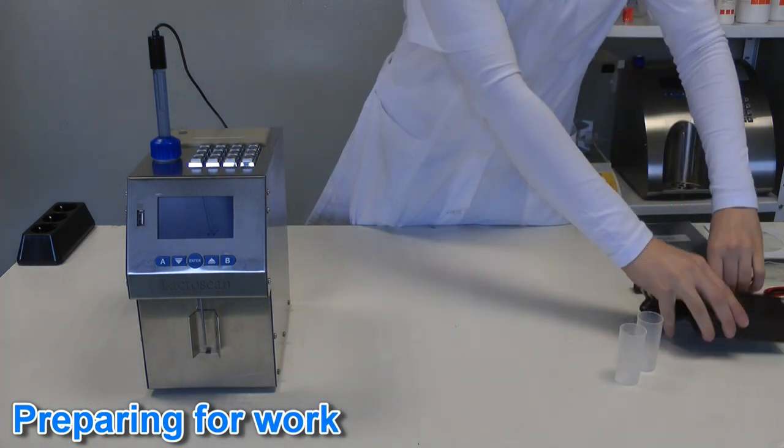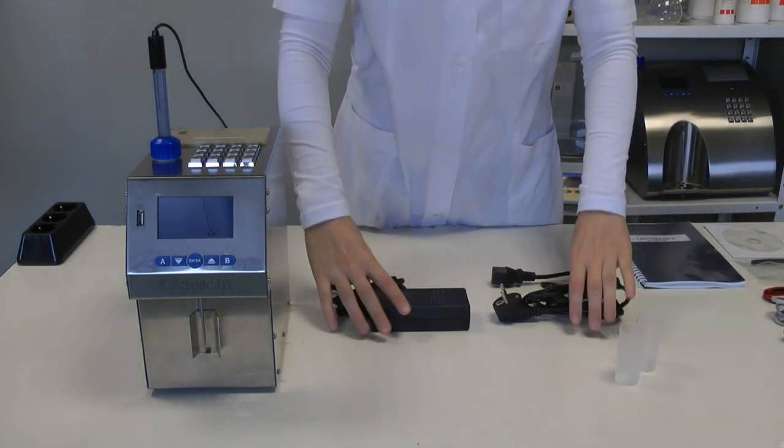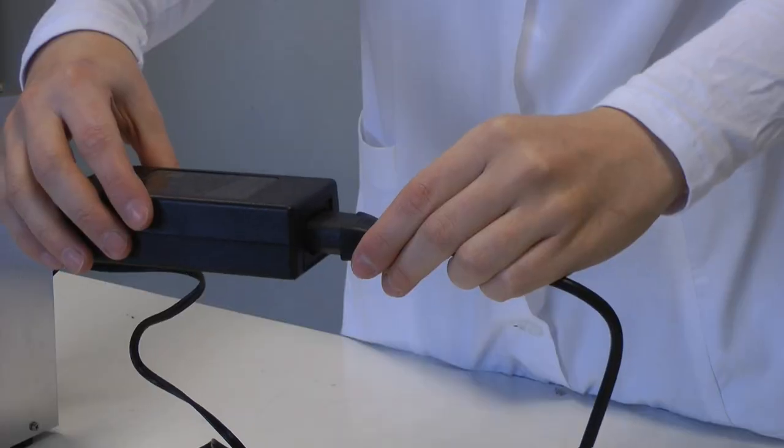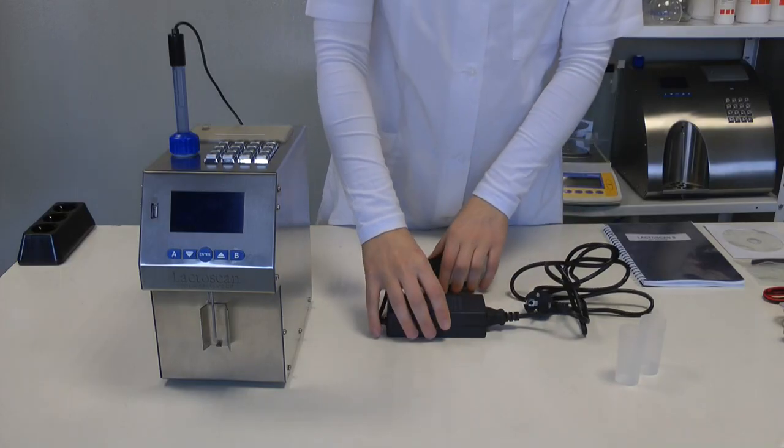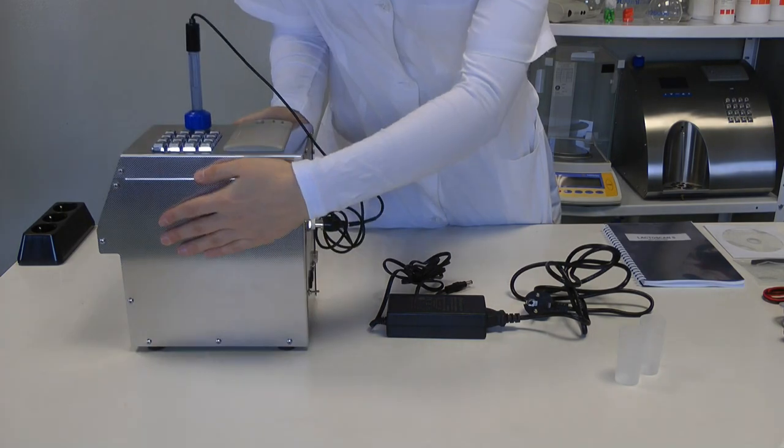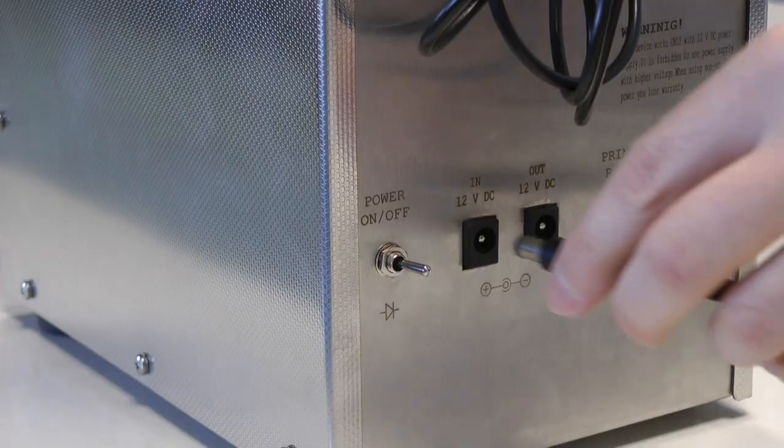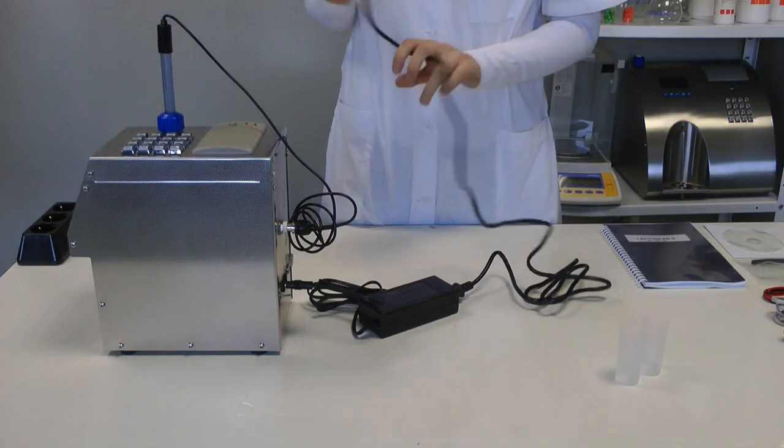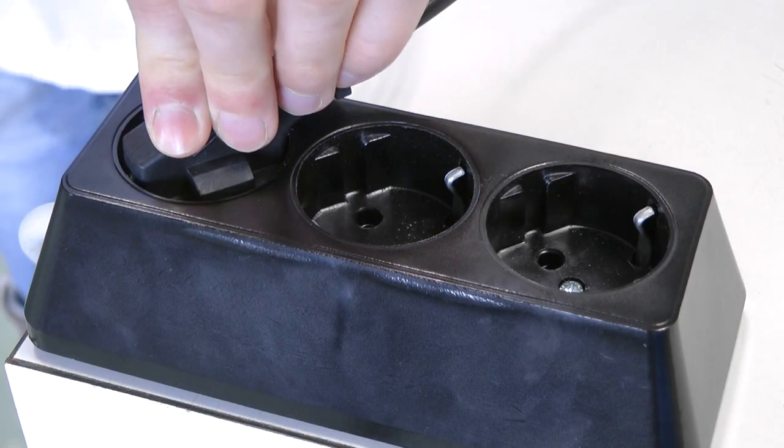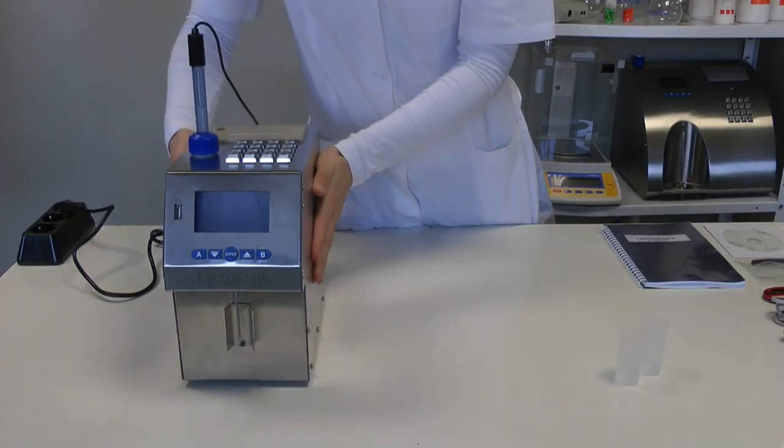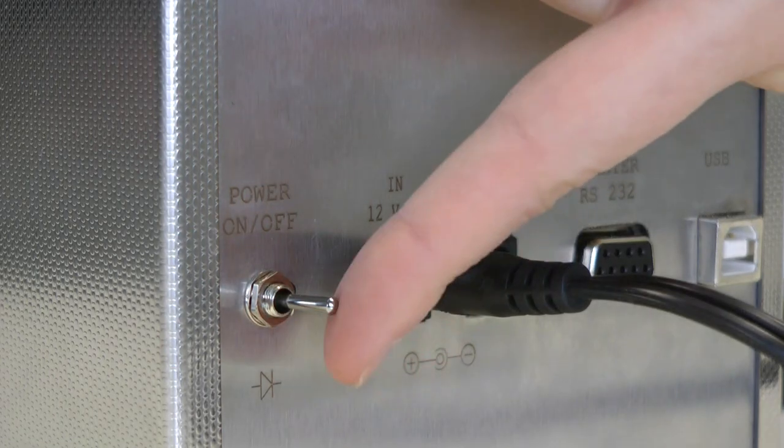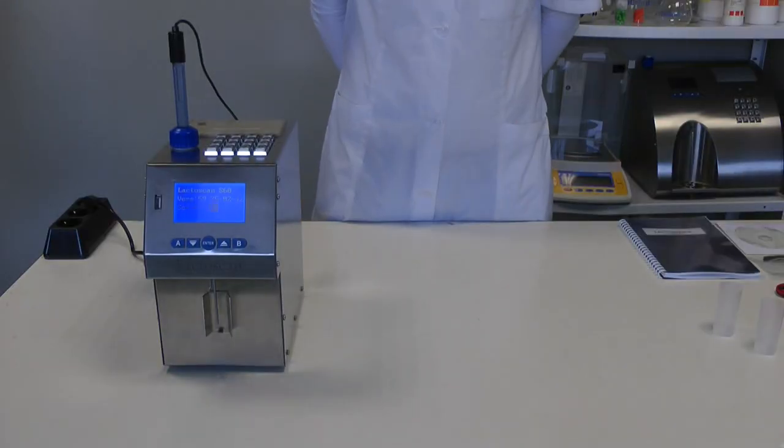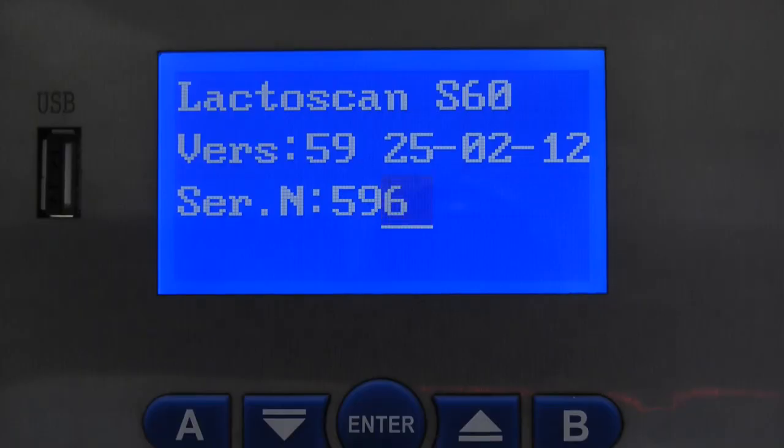To prepare it for work, do the following. Connect the power cable to the switching adapter. Plug it in the 12V input at the rear panel of the analyzer into the electrical network. Switch it on using the power switch at the rear panel. For a short period, the display shows the identity of the analyzer, its model, version, and serial number.